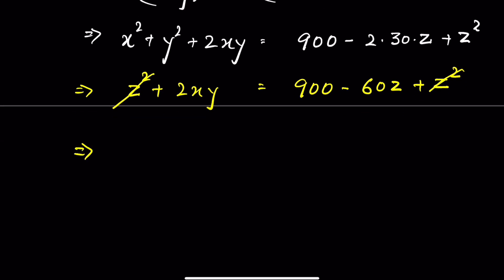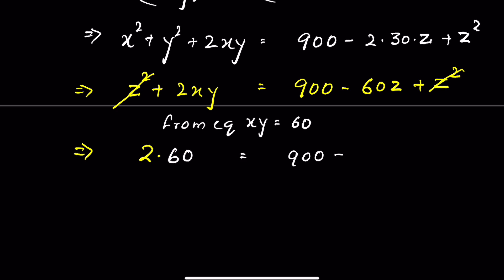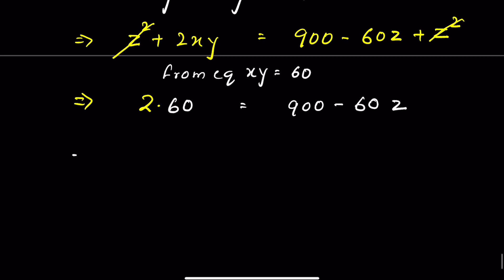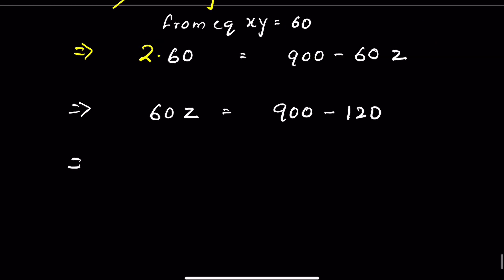We have 2XY, and from equation 1 we know XY equals 60. So 2 times 60 equals 900 minus 60Z, which gives 120 equals 900 minus 60Z, or 60Z equals 900 minus 120, so 60Z equals 780. Therefore Z is equal to 13.